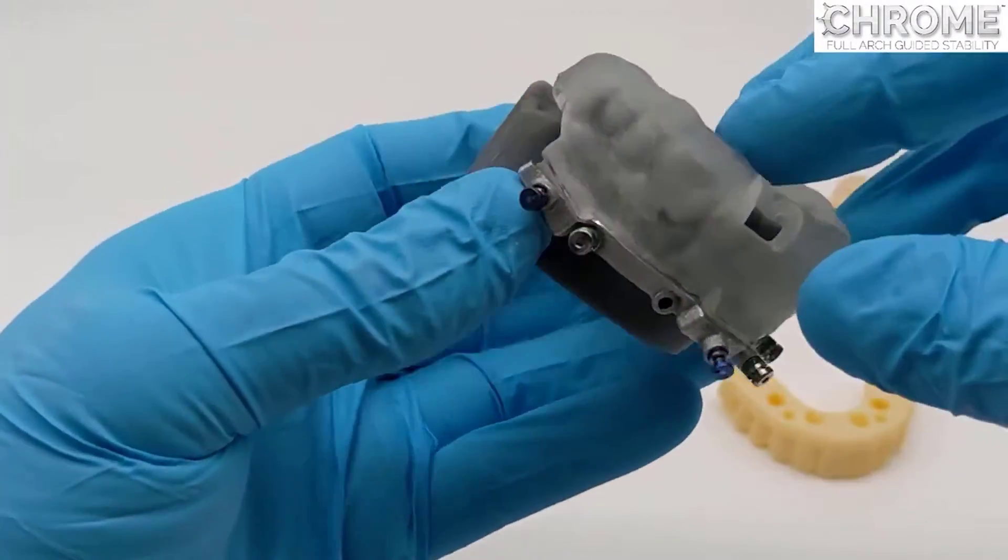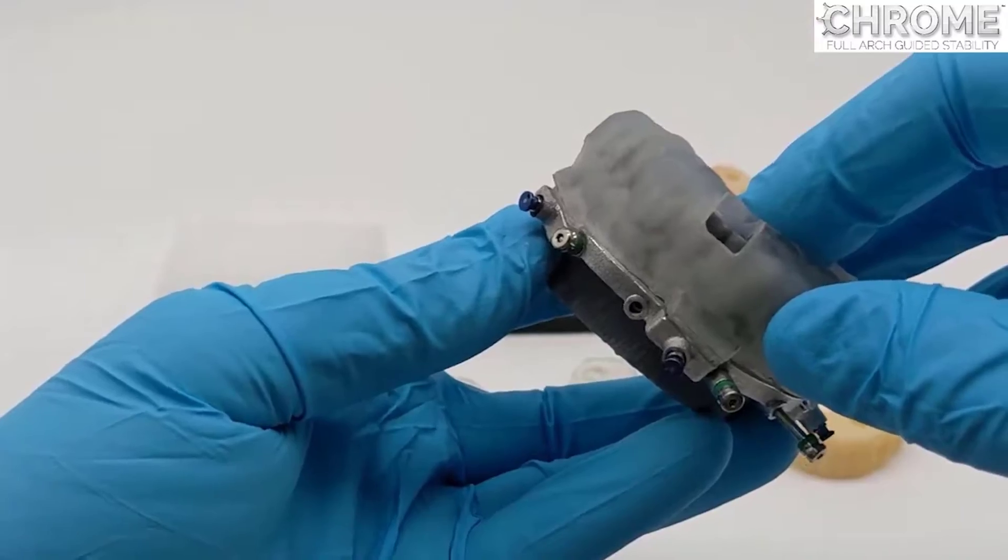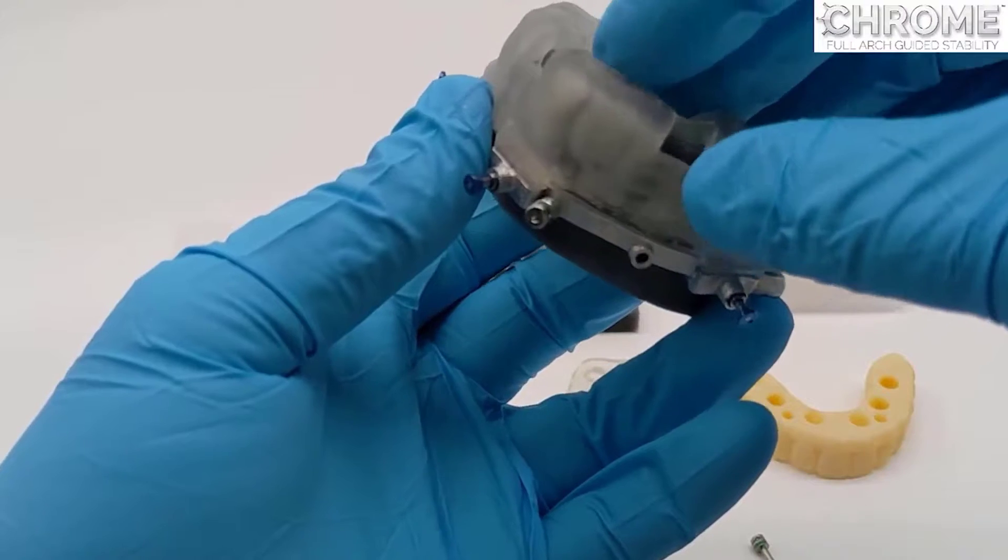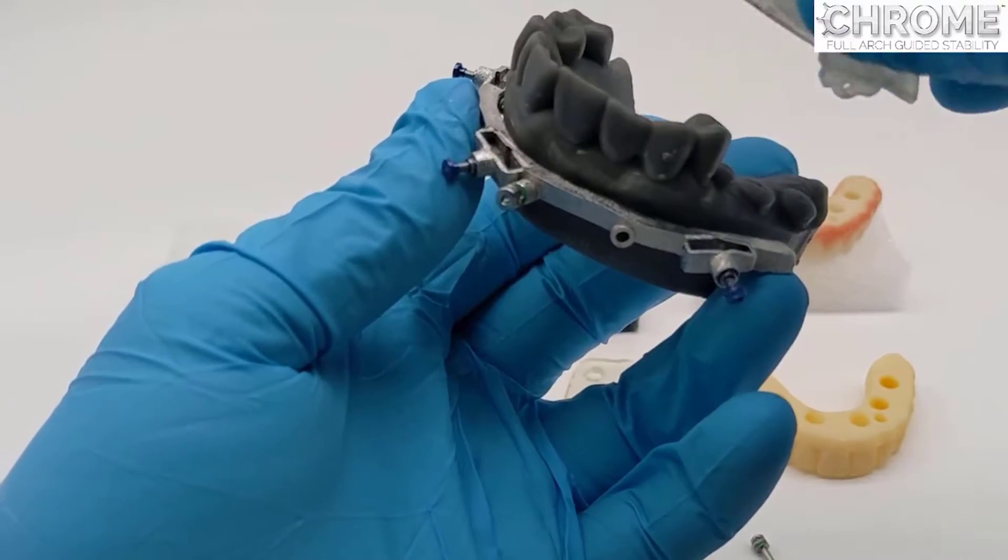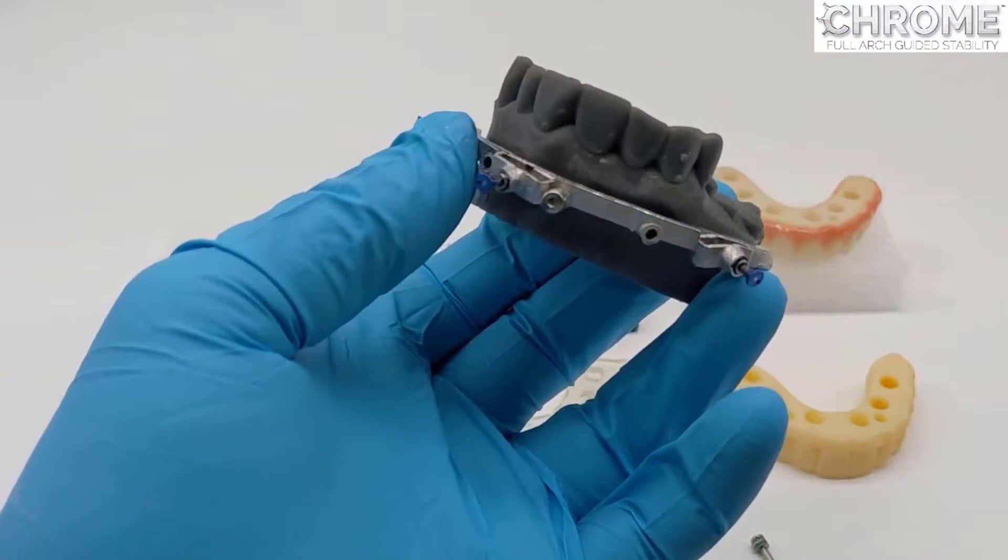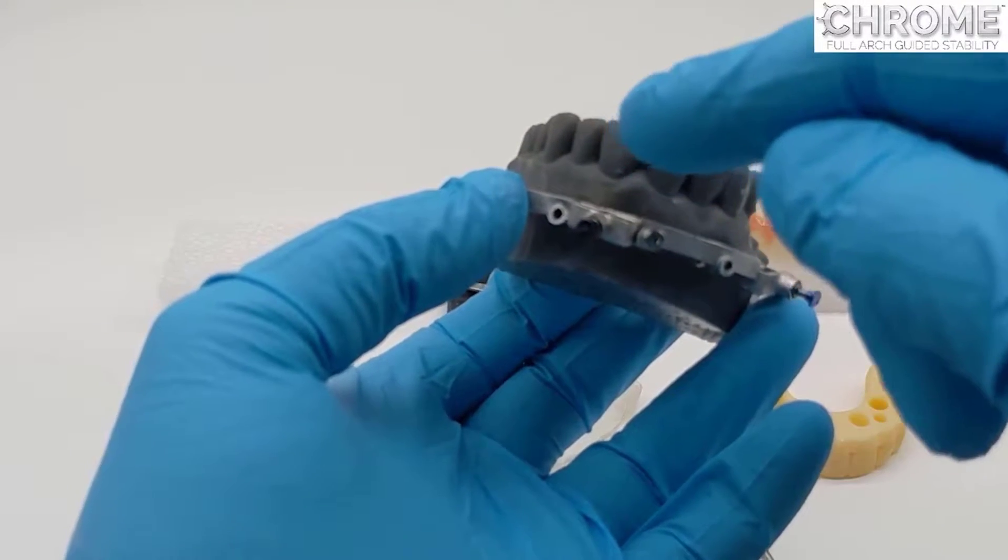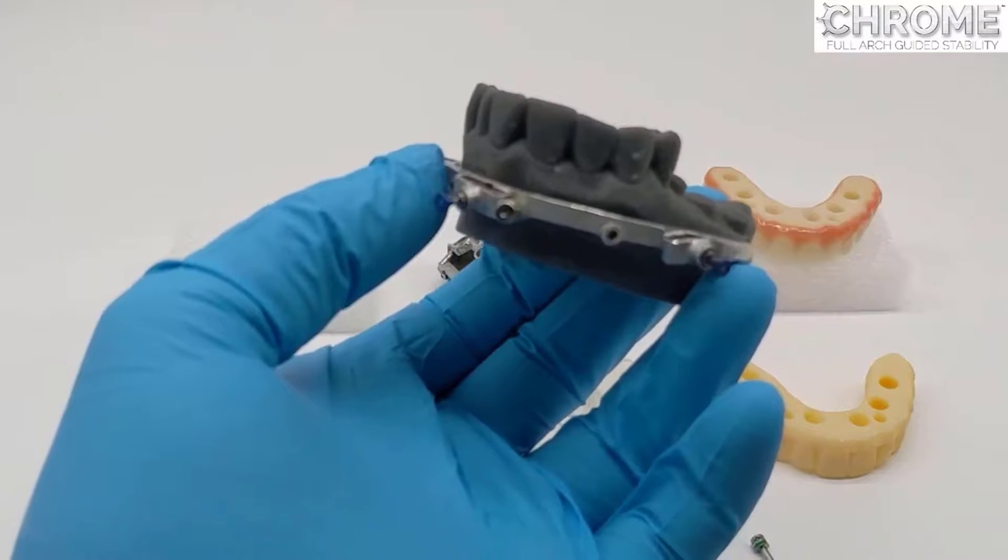The pin guide is then removed from the fixation base, and in this particular form of Chrome, all the bone and teeth above the fixation base are reduced.